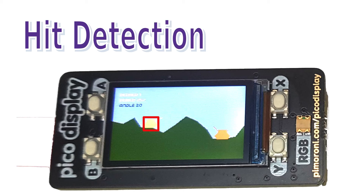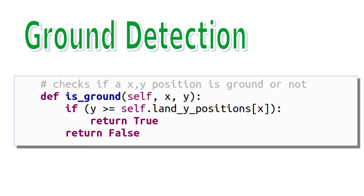To solve the problem, the collision detection method was changed. For the tanks, a bounding box was created — checking if the shell is within that rectangle. It's not perfectly accurate (it won't detect a hit on the gun barrel), but it's close enough for this small display. For the ground, the vertical-line implementation meant a method could be added to the land class to check if a shell position is below the ground. The code stores ground heights in a list called 'land_y_positions', making it easy to compare an x,y position against that list.